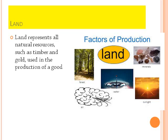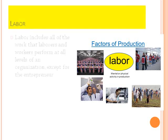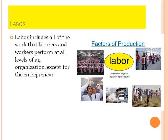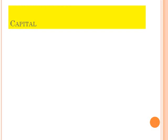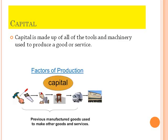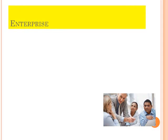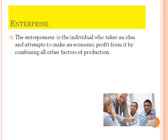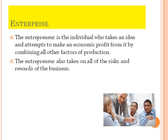The first factor is land, which represents all natural resources such as timber and gold used in the production of goods. The second factor is labor, which includes all work performed by workers at all levels of an organization, except for the entrepreneur. The third factor is capital, which is made up of all tools, machinery and even cash used to produce goods or services. The fourth factor is entrepreneurship — the entrepreneur takes an idea and attempts to make an economic profit by combining all other factors of production, taking on all the risk and rewards of the business.